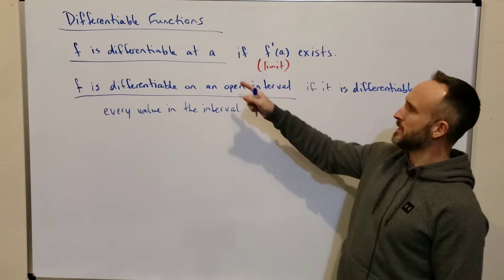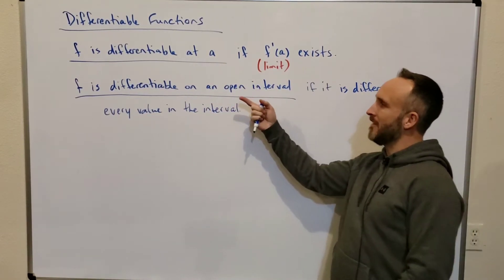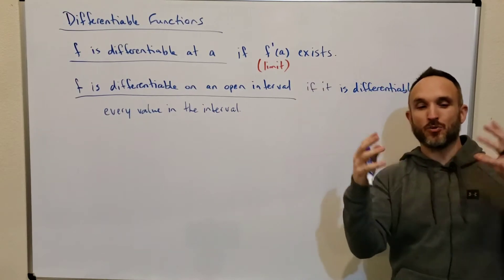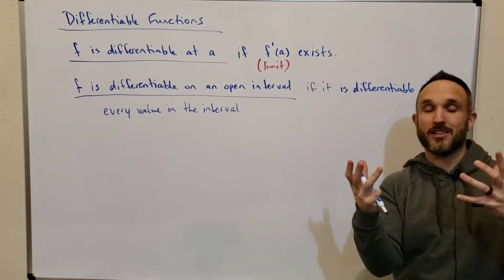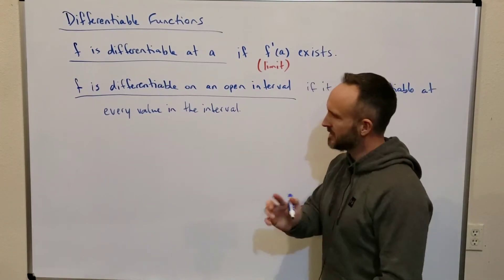If it is differentiable at every value in the interval. So we know what it means to be differentiable at a value, and now if you get f being differentiable at values within an open interval, then we call it differentiable on that open interval. Very simple, right? So let's take a couple examples.